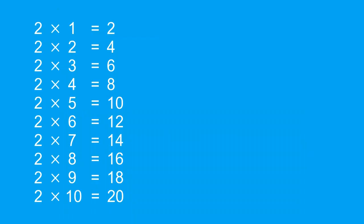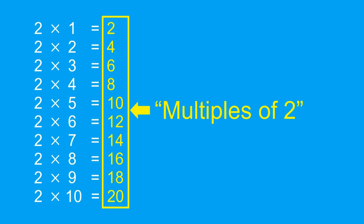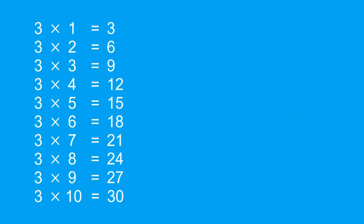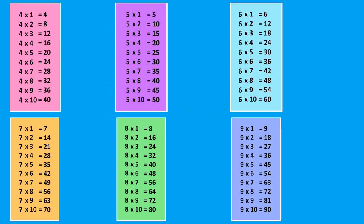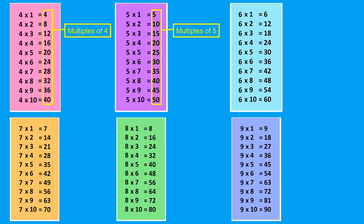Let's take a look at the times table for two. Any counting number multiplied by two will give us these answers, which are called the multiples of two. Likewise, any counting number multiplied by three will give us the multiples of three. As you can guess, these are the multiples of four, multiples of five, and so on.